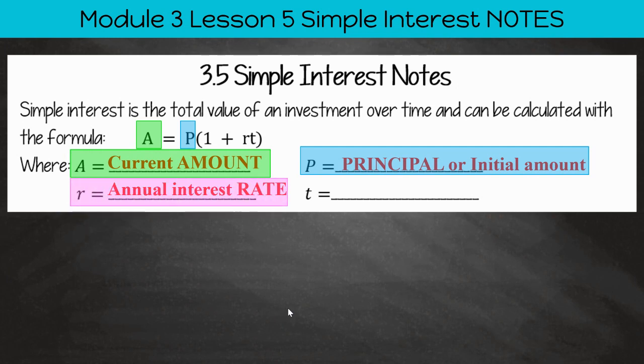R stands for your annual interest rate. R is going to be usually displayed as a percentage. And if it is a percentage, then you have to convert that to a decimal.